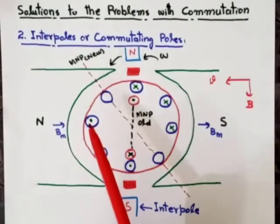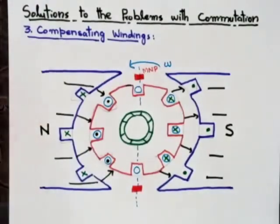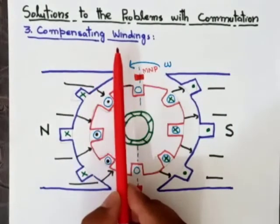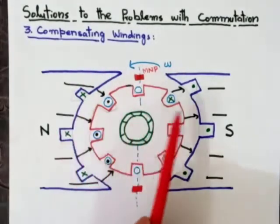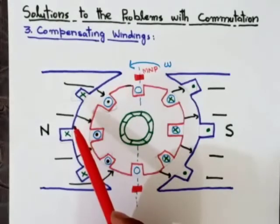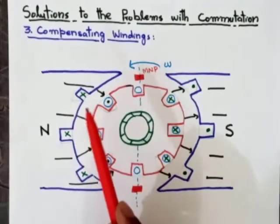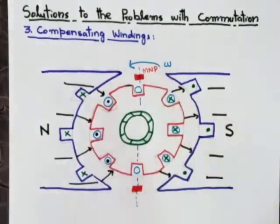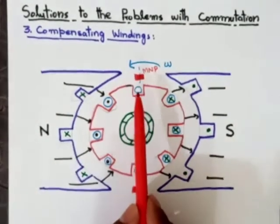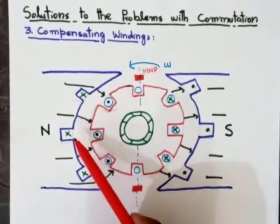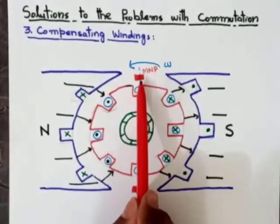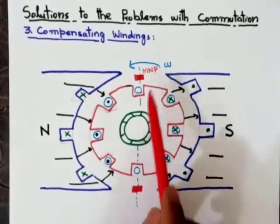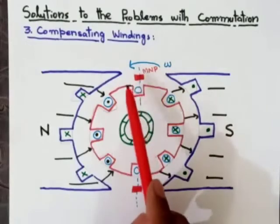The third method to improve the commutation is compensating windings. This technique will help reduce the flux weakening problem, which exists under the north and south poles. Remember, this particular technique will not help overcome the L·di/dt voltages — for that, you will still use interpoles. This technique only helps minimize the effect of flux weakening. It will also not minimize sparking across the brushes directly — for that we use interpoles.